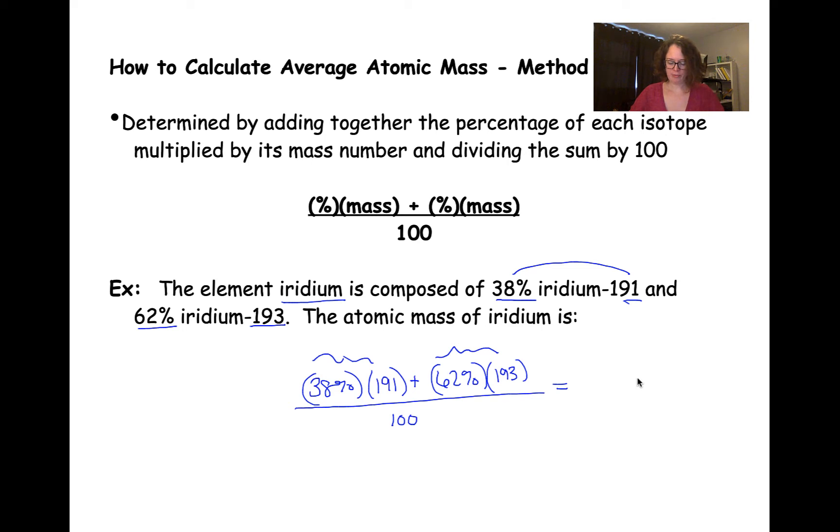So if we do that, we'll do 38 times 191 and get 7,258 plus 62 times 193 gives us 11,966, all over 100.